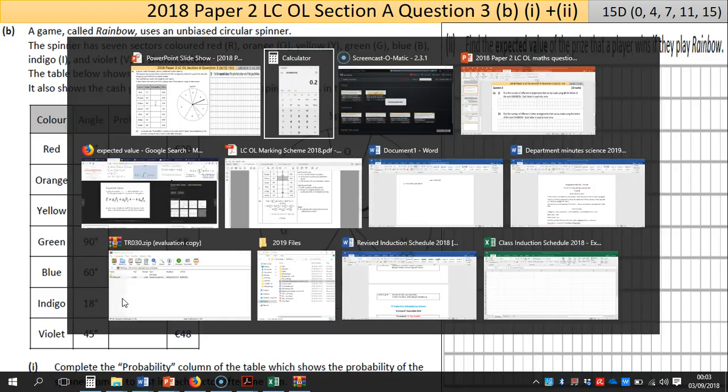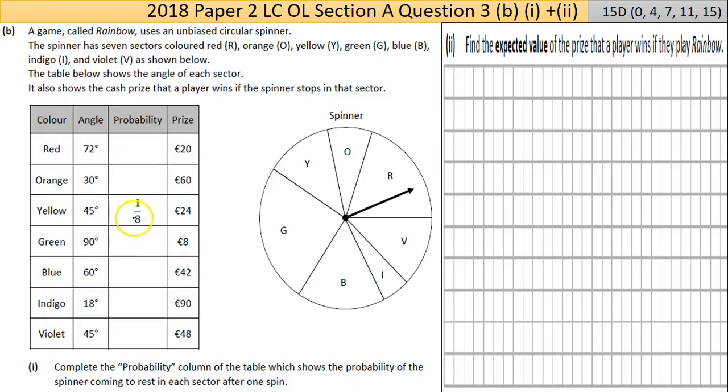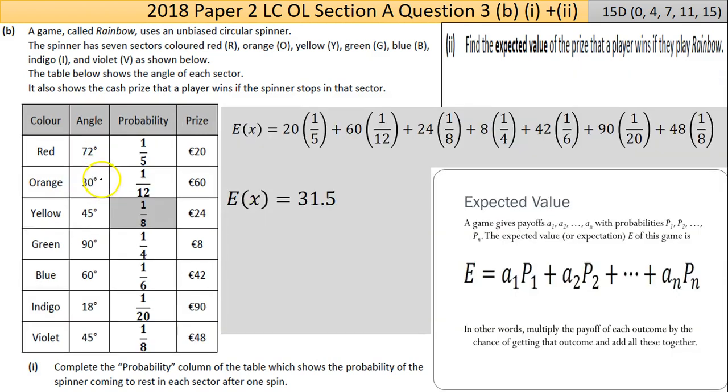I can show that on a calculator. If I divide 45 by 360, I get 0.125. Now 1/8, one divided by 8, is 0.125. Same thing for the rest of them. The first one, I'm dividing 72 by 360 to get 1/5. The 30 divided by 360 gives 1/12. The 90 divided by 360 is 1/4. 60 divided by 360 is 1/6. 18 divided by 360 is 1/20. And 45 divided by 360 is 1/8. So that's the first part done, fairly well answered from last year's exams I marked in Paper 2.